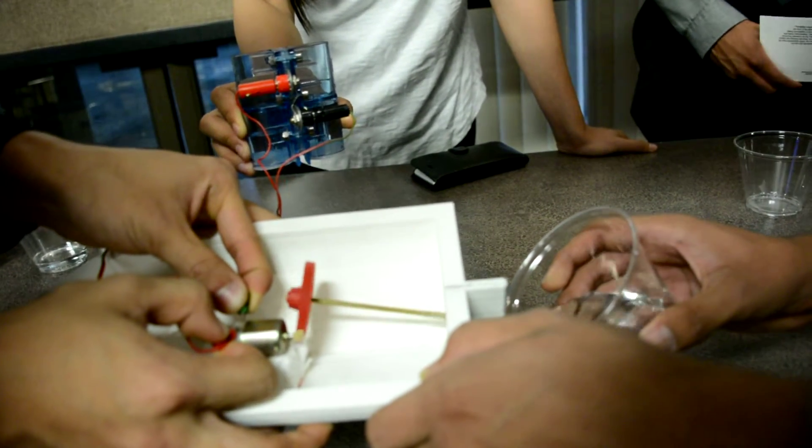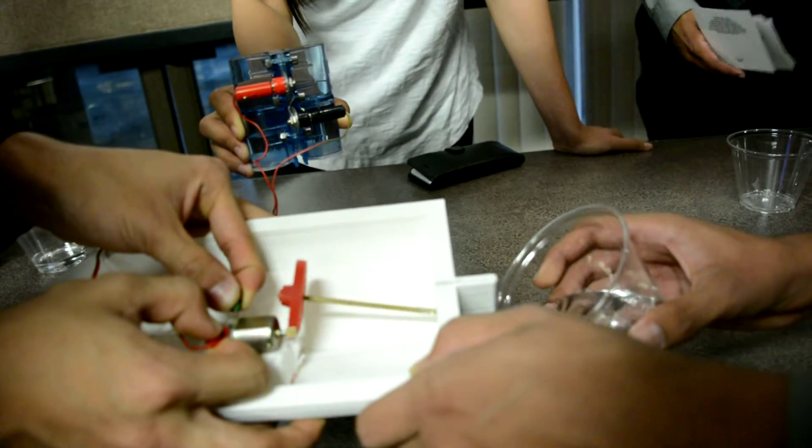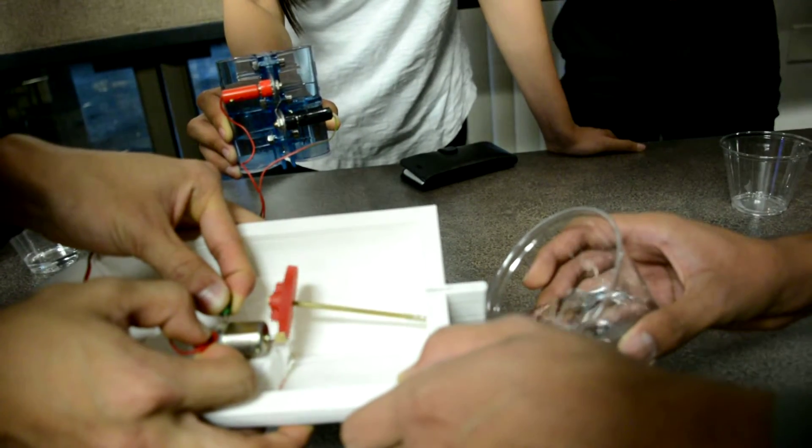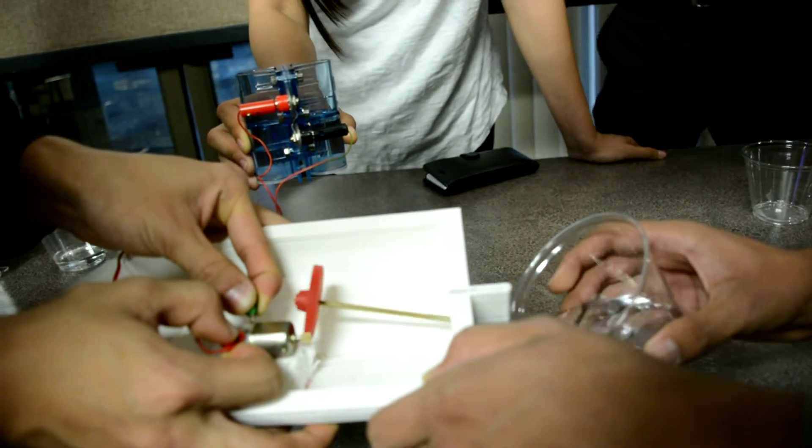And then we have it here power a motor using a small gear train with a propeller. So that shows right here how it can be generated and used to move. Thank you.